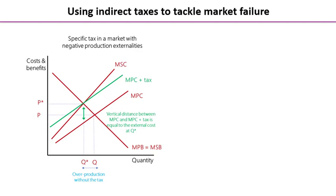We're thinking here particularly about negative production externalities, and in just a moment we'll take a look at negative consumption externalities and demerit goods. In the diagram on the screen on the left hand side, we have a fairly standard negative production externalities diagram. You can see from the red lines that the socially optimal equilibrium is where marginal social cost equals the marginal social benefit curve, giving us the socially optimal equilibrium Q star.